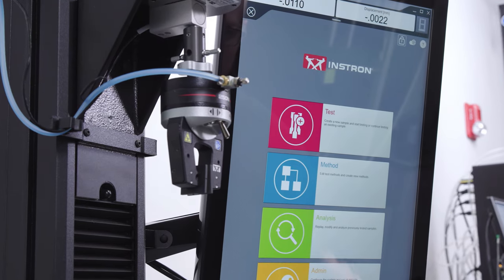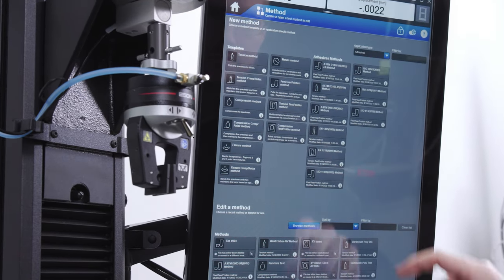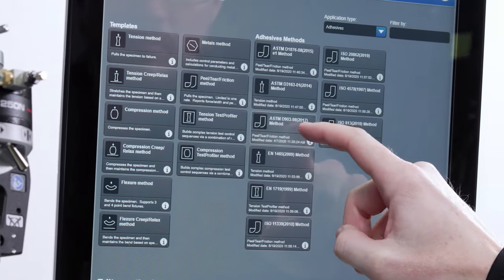To simplify your testing, ASTM D903 is included in Blue Hill Universal's Adhesive Method Suite.